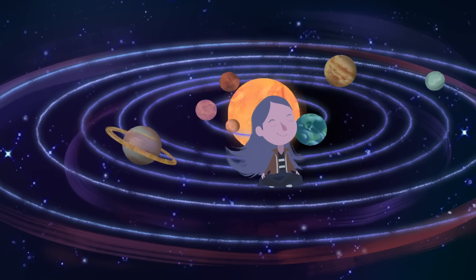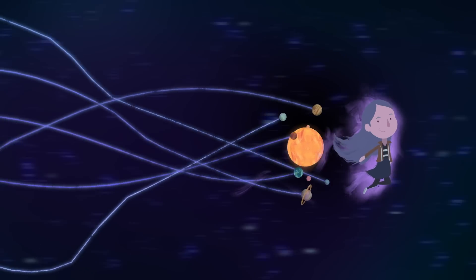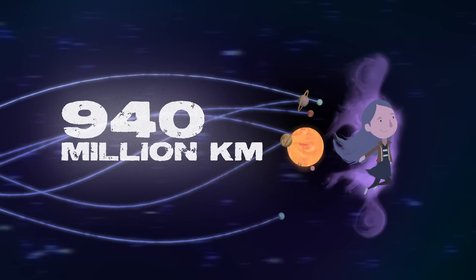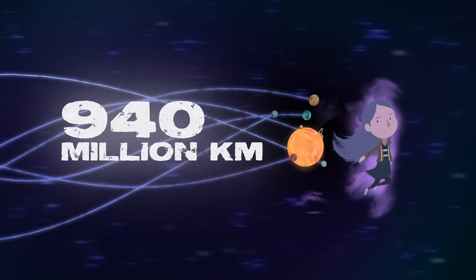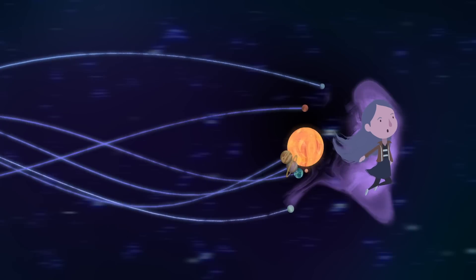Except your motion isn't perfectly circular. It's a curly cube. As the Earth elliptically orbits the sun, there you go adding roughly another 940 million kilometers every year. But it doesn't end there.